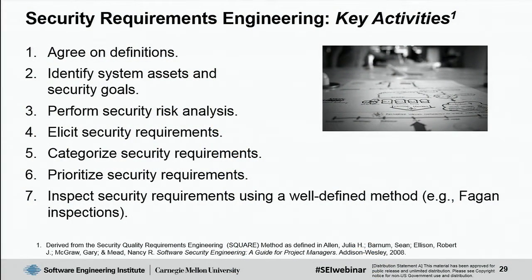Here are some key activities in security requirements engineering. First, agree on definitions — make sure everyone is talking the same language, because people often have different views of what terms mean. Second, identify system assets and security goals: look at what critical data the system stores, processes, and transmits, and then understand what's important about it from a confidentiality, integrity, and availability perspective.